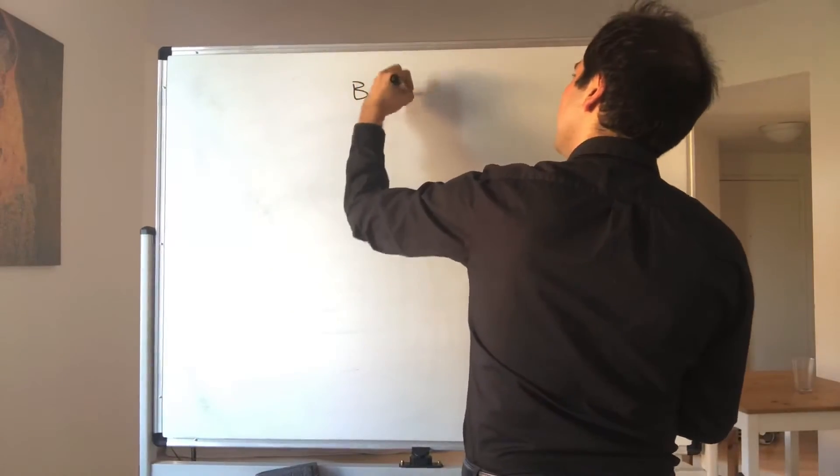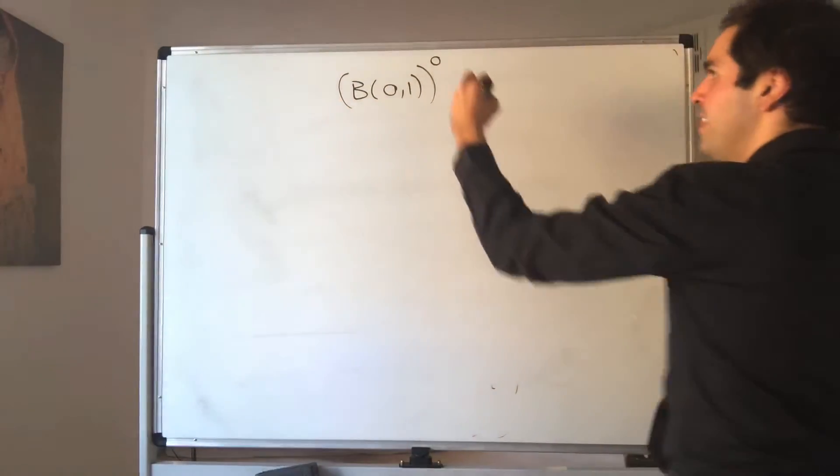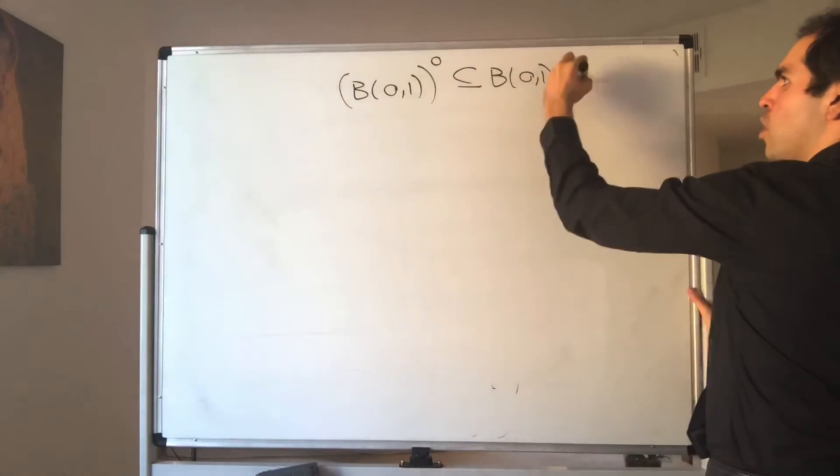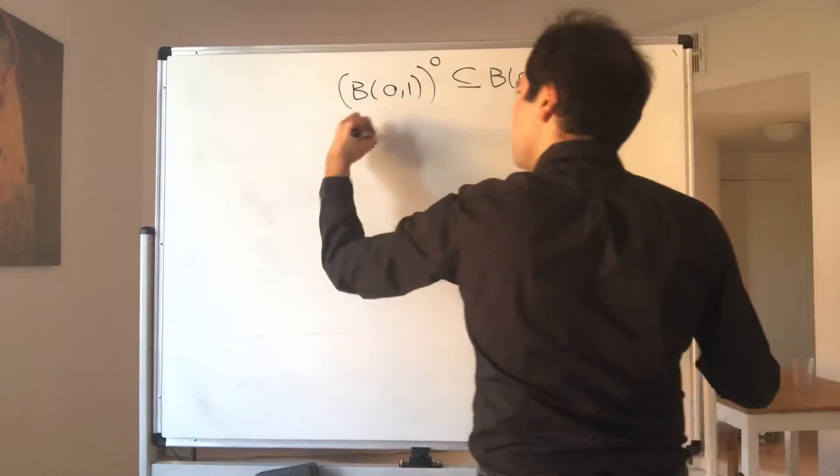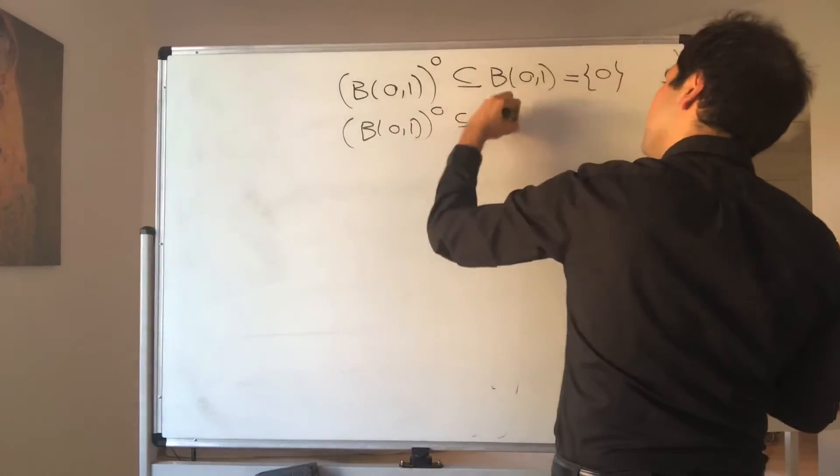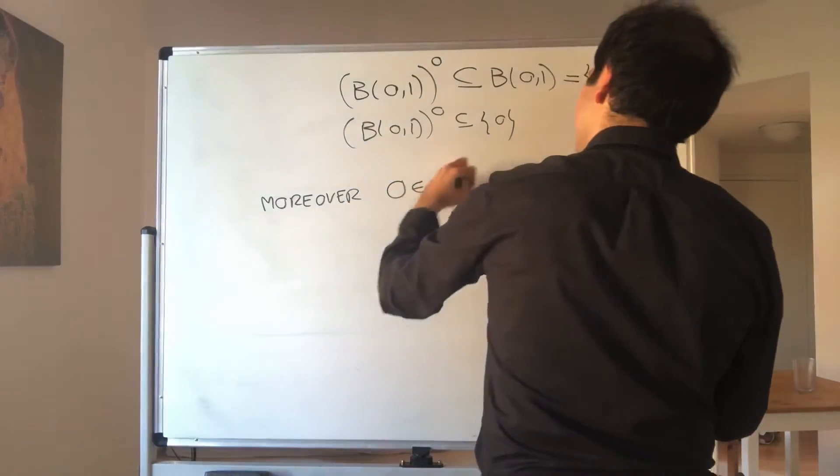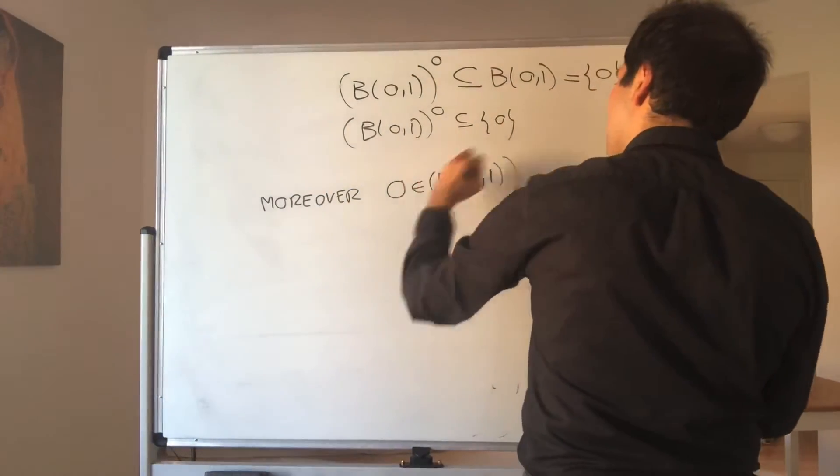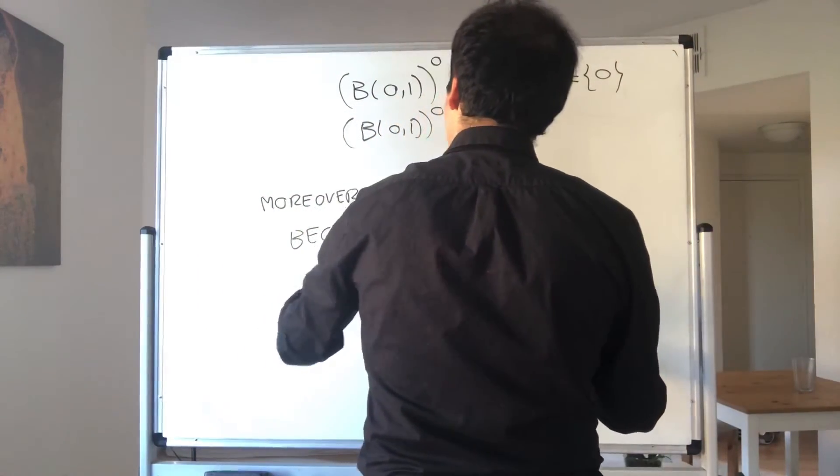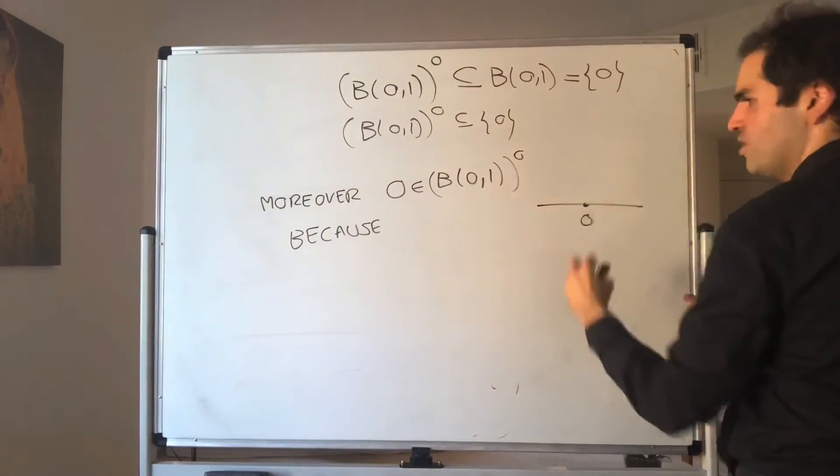Alright, so let's now find the interior of that set. Well, on the one hand, the interior is always included in the set itself. So the interior, we know that it's a subset of zero. But then zero is in that interior, because let's find a ball centered at zero that is inside that ball centered at zero in radius one. Well, consider, for instance, the ball of radius zero and one-half.